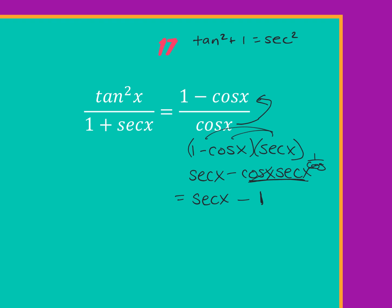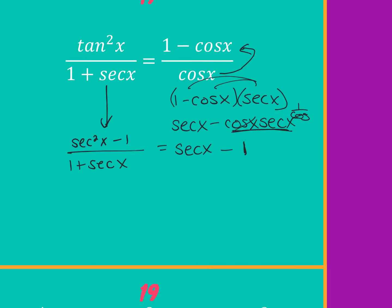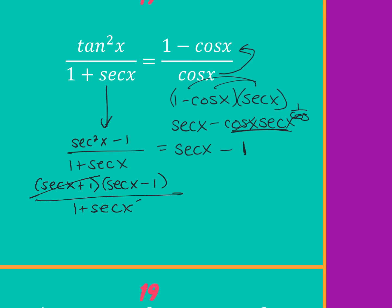I can't change the bottom because it's not squared, but I can change the top. Tangent squared can get replaced — secant squared x minus one, over one plus secant of x. That's the difference of two squares again — factor it as secant x plus one times secant x minus one. Then the plus ones cancel and you get secant of x minus one equals secant of x minus one.